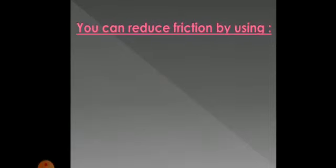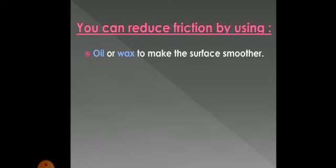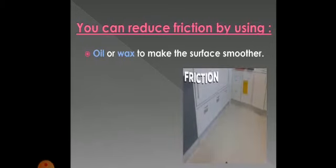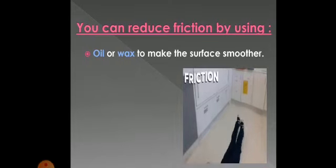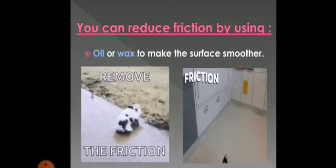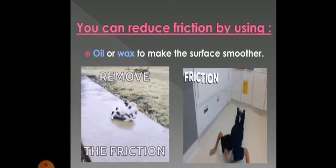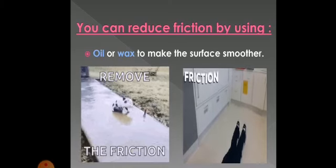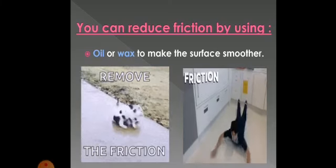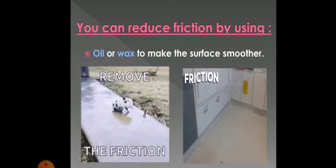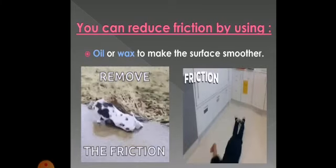How can we decrease friction? How can we make a high-friction surface become a low-friction surface? It's easy — use oil or wax. This makes the surface smoother. Look at this boy who wants to slide across the kitchen floor — he should put oil or wax. Like this animal gliding over the floor because of the oil, the surface is smooth and there is less friction. Also, when you find it hard to comb your hair, you put oil or cream to decrease the friction and comb your hair easily.